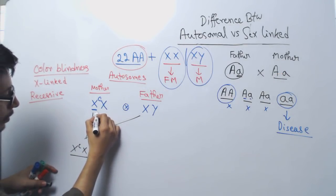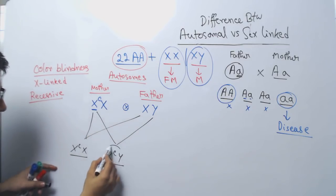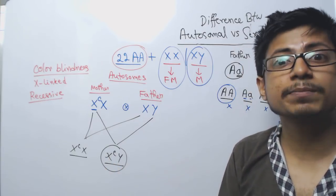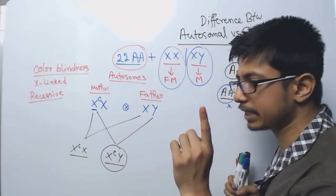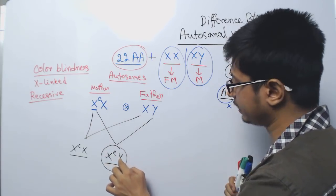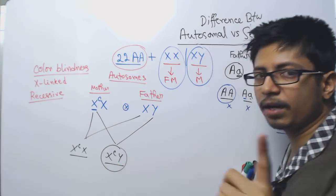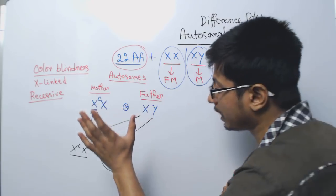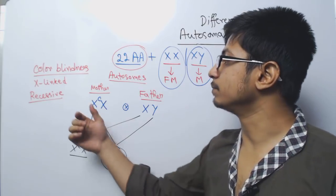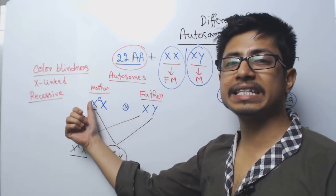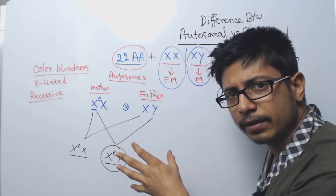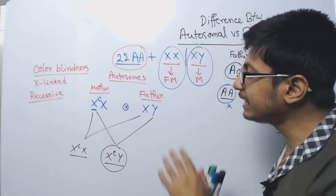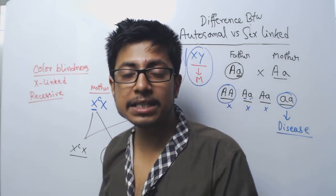Another combination is XCY — a male offspring. The problem with males is that they have only one X, so if a faulty gene comes from that X, it will be expressed in the body. This boy gets the colour blindness gene from the mother, and the Y chromosome cannot compensate. So that boy will be colour blind. The mother had normal vision, the father had normal vision, but the son becomes colour blind. In X-linked inheritance, males are much more prone to get the disease.